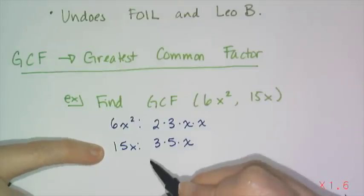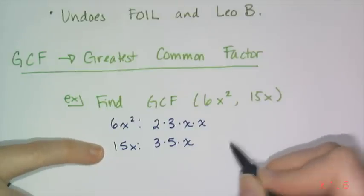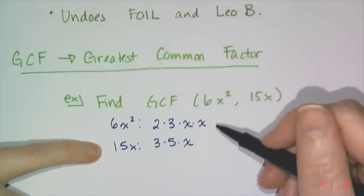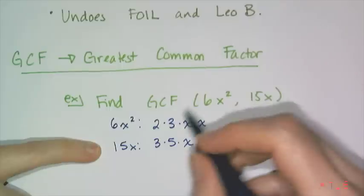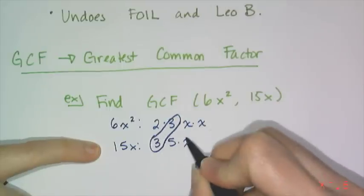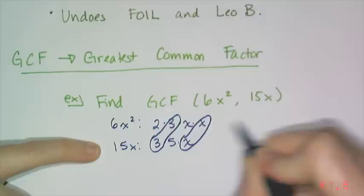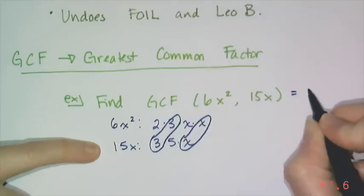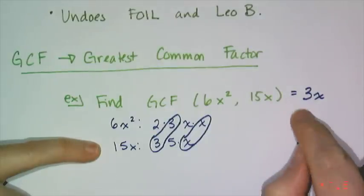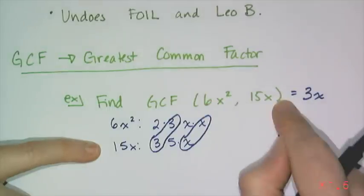Now when you break it up like this, you can find each of the individual factors and then multiply them together to get the greatest factor. So in this case, they each have a 3 in common and they each have an x in common, which means the GCF is simply 3x. So this 3x is common to each of those factors.